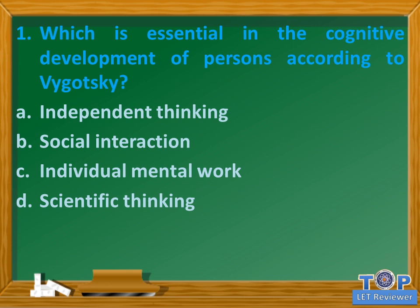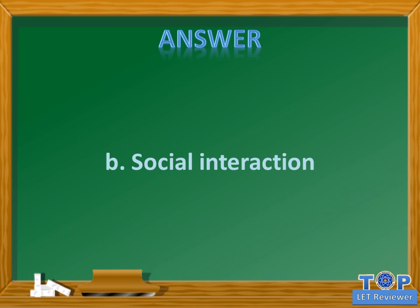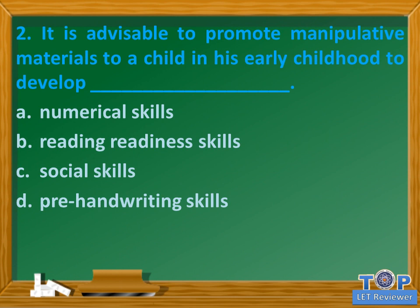Question number one: which is essential in the cognitive development of persons according to Vygotsky? A) independent thinking, B) social interaction, C) individual mental work, D) scientific thinking. Answer: B) social interaction.